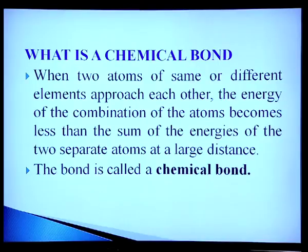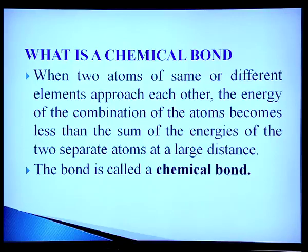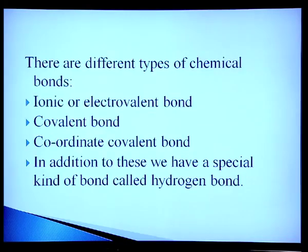The first question that arises is: what is a chemical bond? When two atoms of the same or different elements approach each other, the energy of the combination of the two atoms becomes less than the sum of energies of the two separate atoms at a large distance. The bond so formed is called a chemical bond. There are different types of chemical bonds such as ionic or electrovalent, covalent bond, coordinate covalent bond, and a special kind of bond called hydrogen bond.